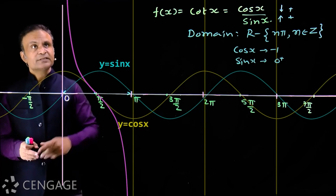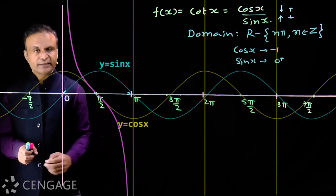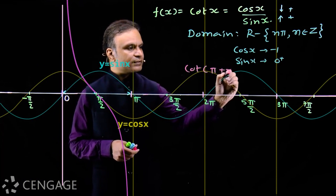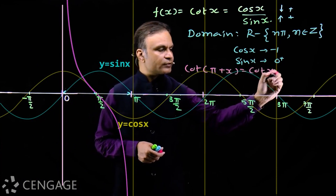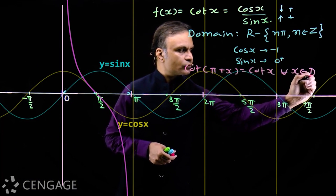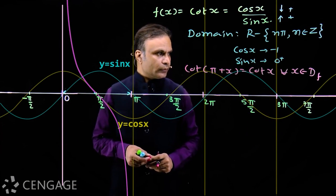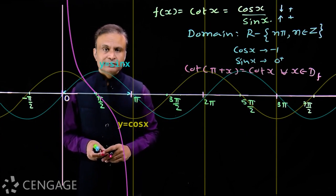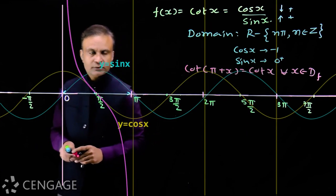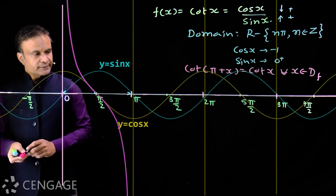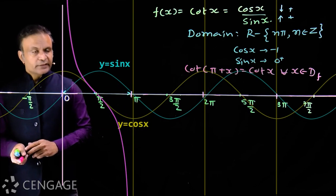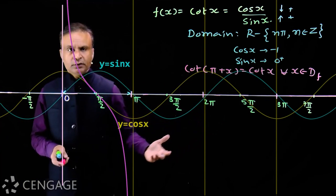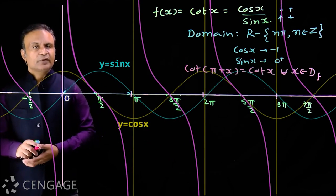The width of this interval is π units and the function continuously decreases across it. For cot(x), we know that cot(π + x) = cot(x) for all x in the domain, which means the fundamental period of cot(x) is π. So in the intervals (π, 2π), (2π, 3π), and so on, we have the same graph as in (0, π).